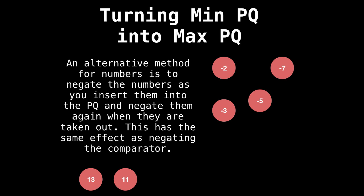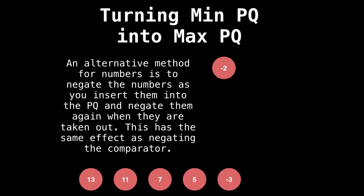Next is minus 11. So really positive 11. And so on minus seven, seven, and so on just keep pulling and then renegate the value to get it out of the priority queue. It's a pretty neat hack.